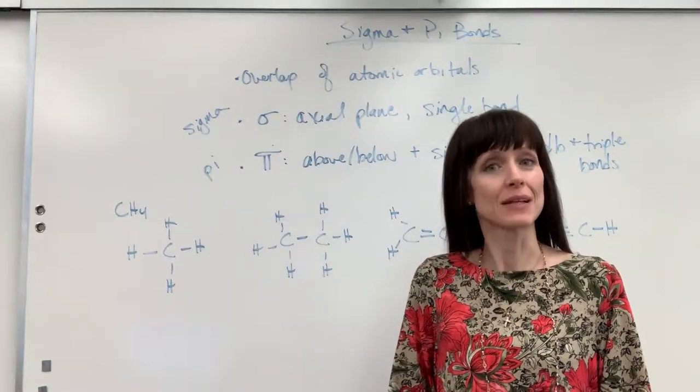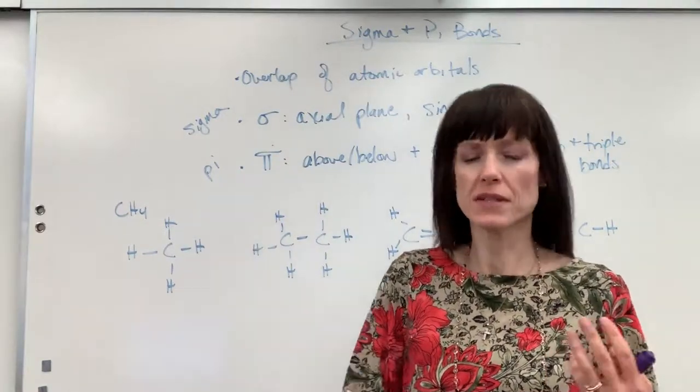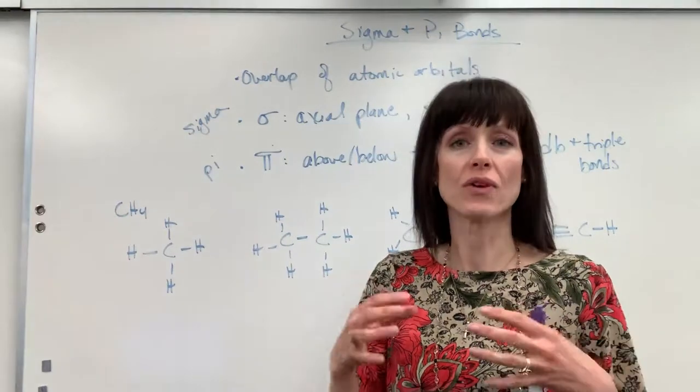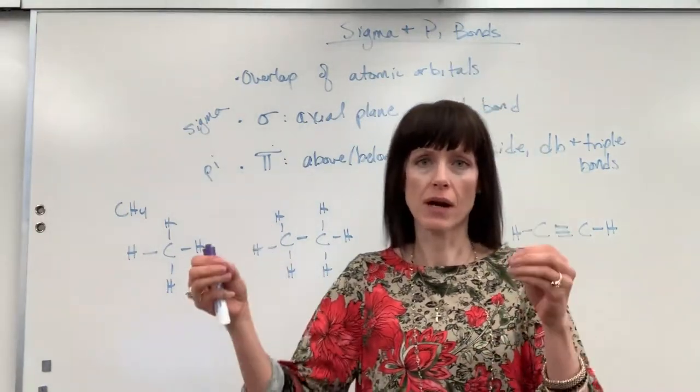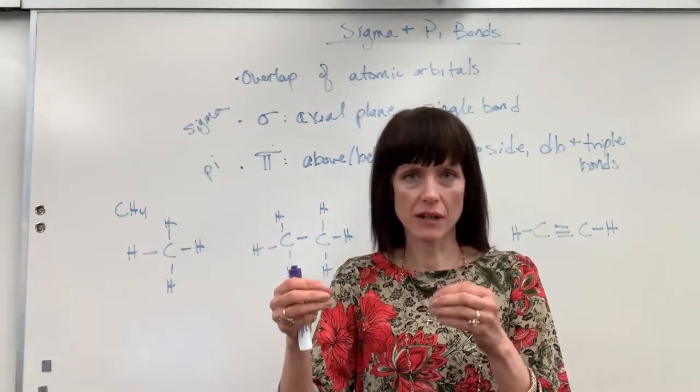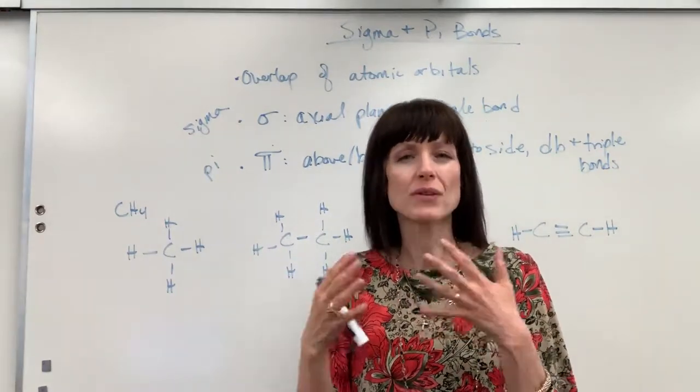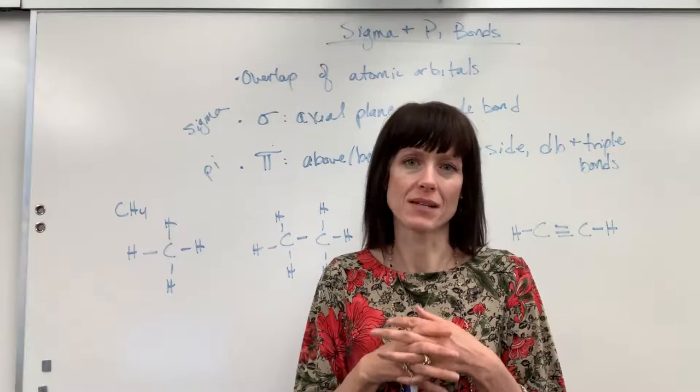Hi, we're going to talk about sigma and pi bonds. This is another way to explain the overlap of atomic orbitals, that when you have two atoms come together, share electrons, how those electrons share, a way to represent them.